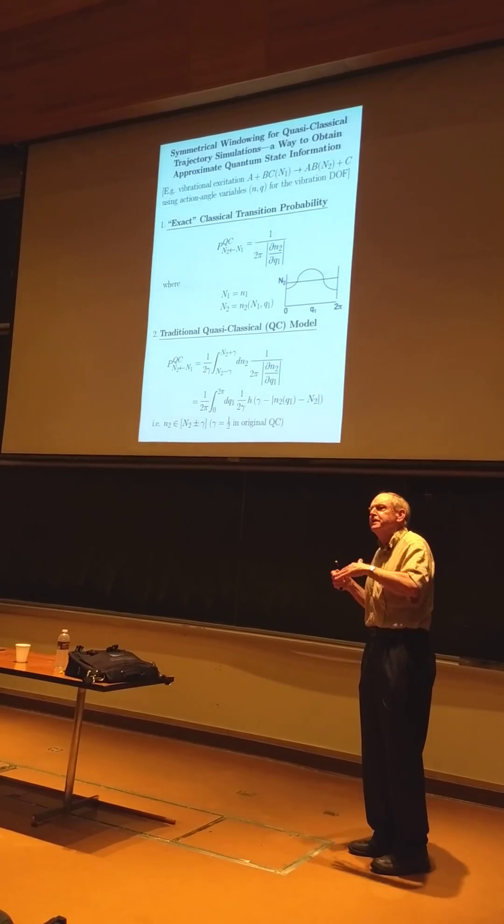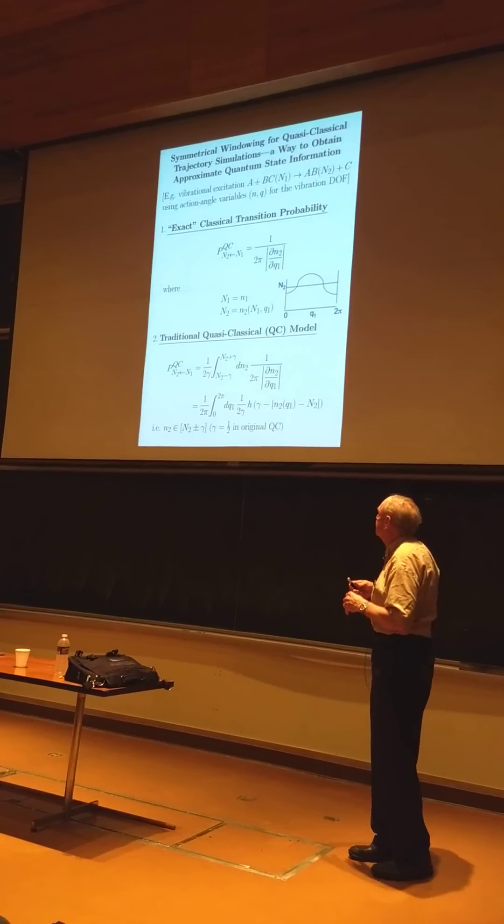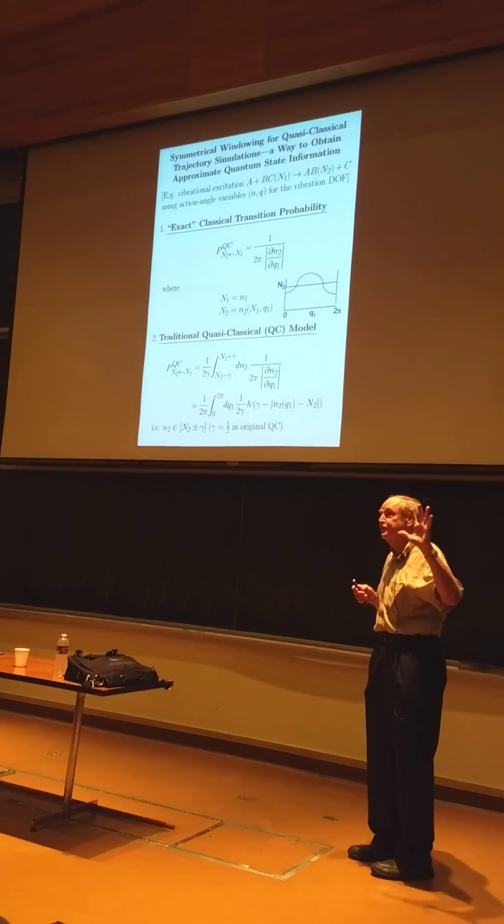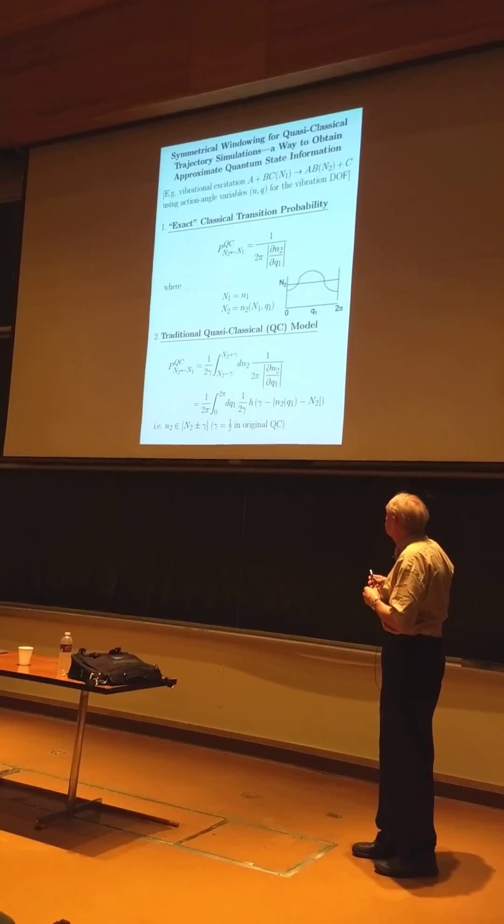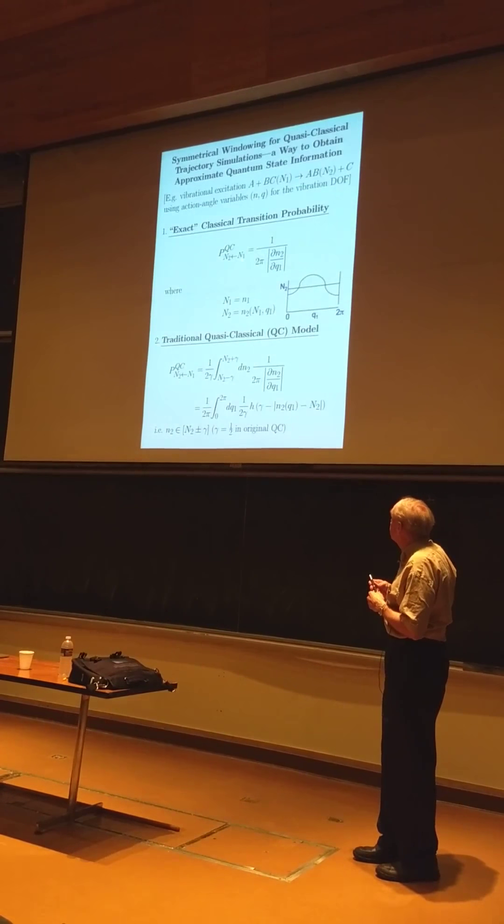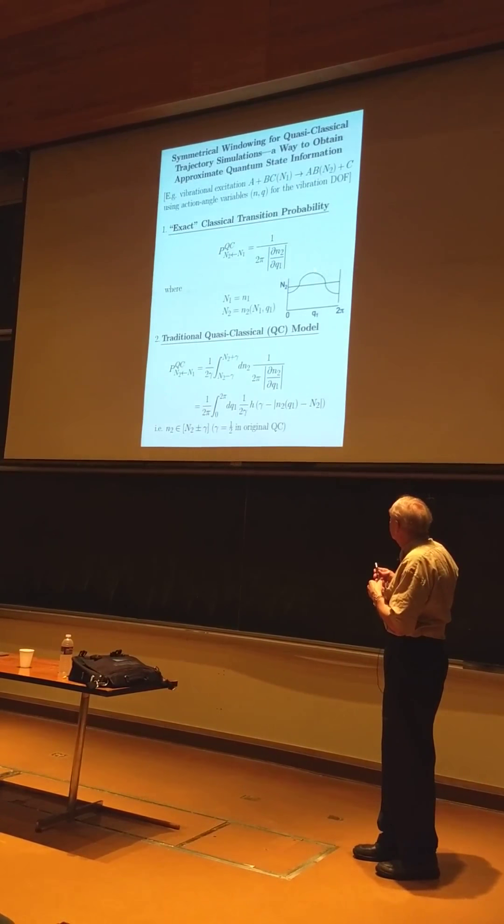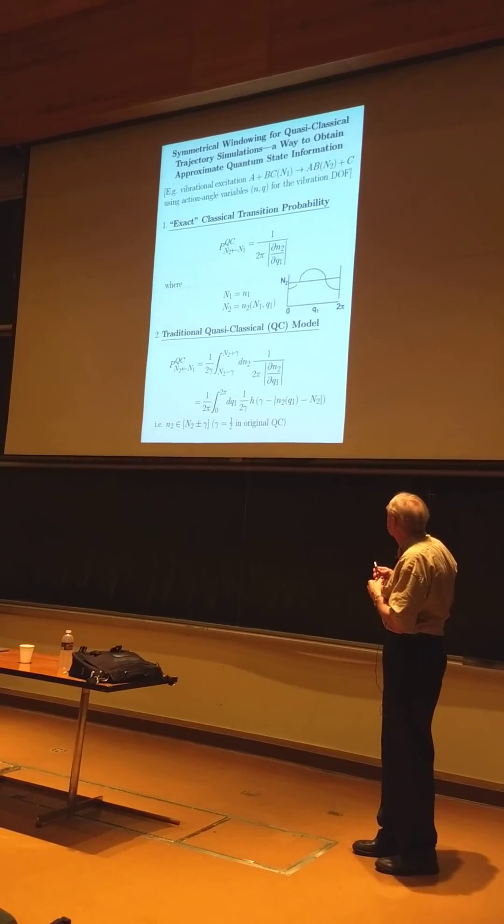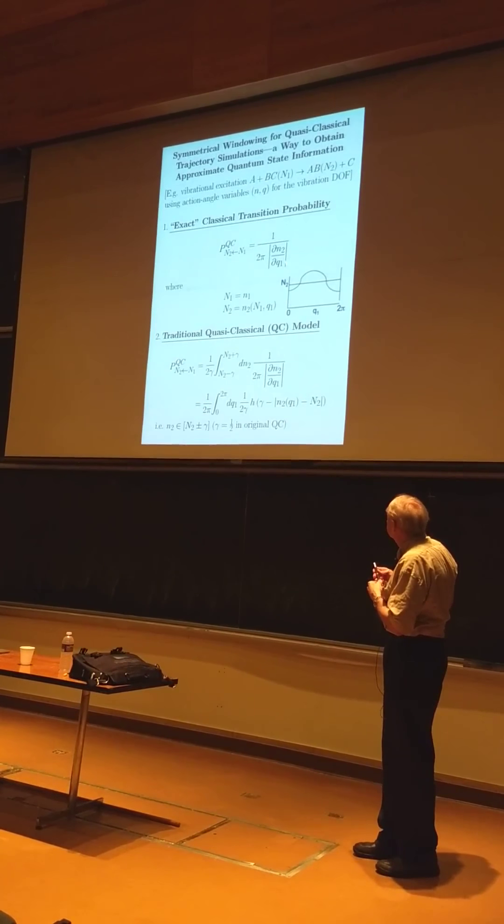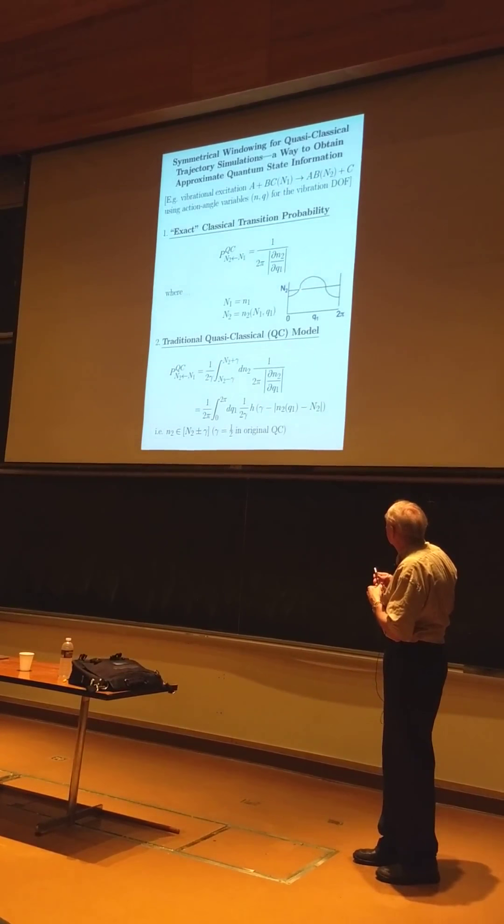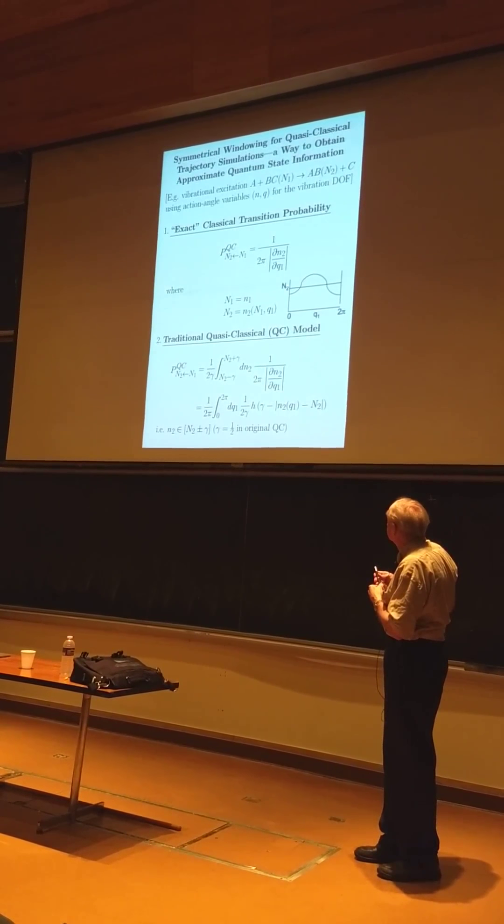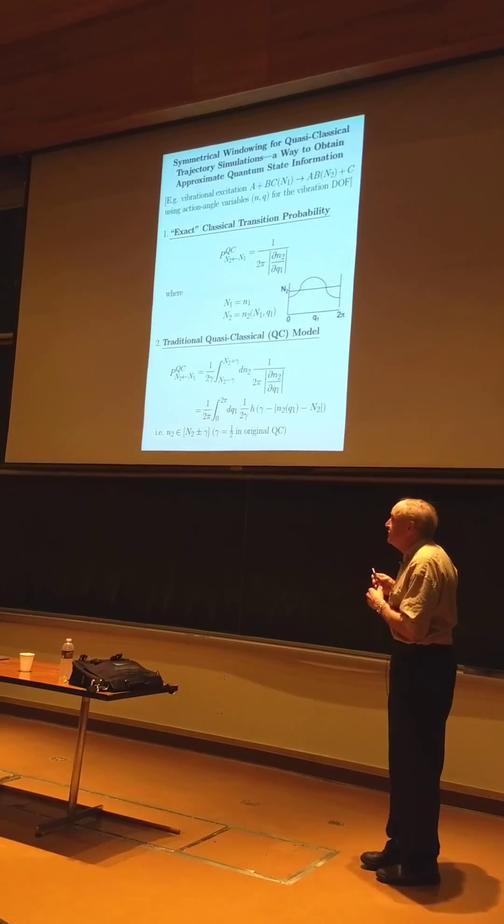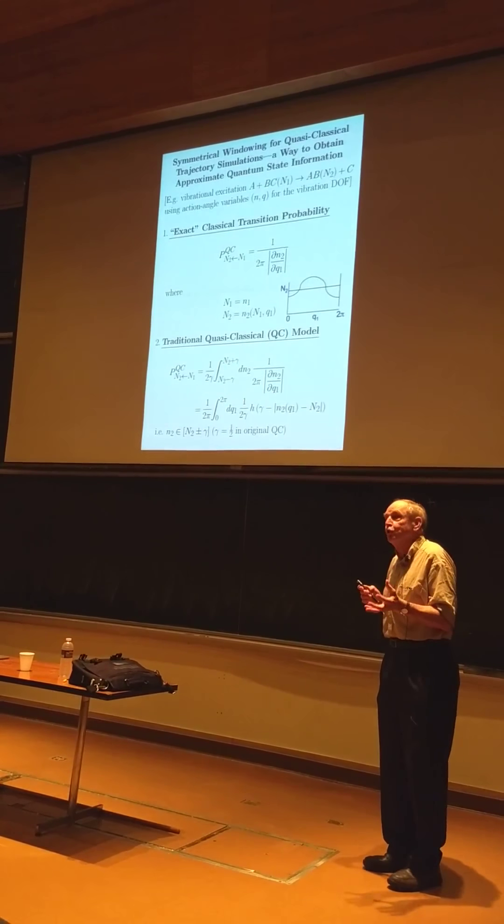And semiclassically, if the interference affects between... But we won't be... We're not doing semiclassics. This is all... And in the classical approximation, the transition probability is the Jacobian. And the derivative of this... The slope of this function evaluated at the value of q1, for which that makes the final action an integer.